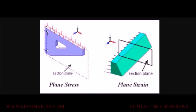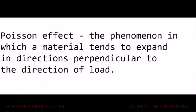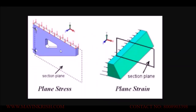Now for plane stress and plane strain, we describe the physical behavior of the object, starting from the thin plate. When the load acts on the thin plate, it deforms because of the Poisson effect. Poisson effect is a phenomenon in which a material tends to expand in directions perpendicular to the direction of a load. On the thin plate, we don't have much material over the z-axis, so the deformation generated over the z-axis will be neglected, which makes the stress over the z-axis to be considered approximately as zero.